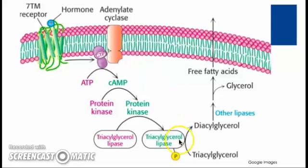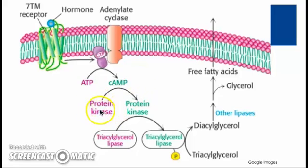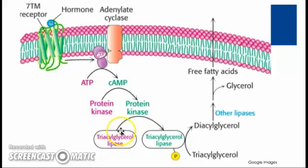We will now review the series of events activating the triacylglycerol lipase. First we see that ATP is hydrolyzed to cyclic AMP. This cyclic AMP promotes the conversion of protein kinase from the inactive to the active form. The active form of protein kinase then promotes the phosphorylation of triacylglycerol lipase, activating it. You see here the phosphate group bound to the triacylglycerol lipase, which is now active.